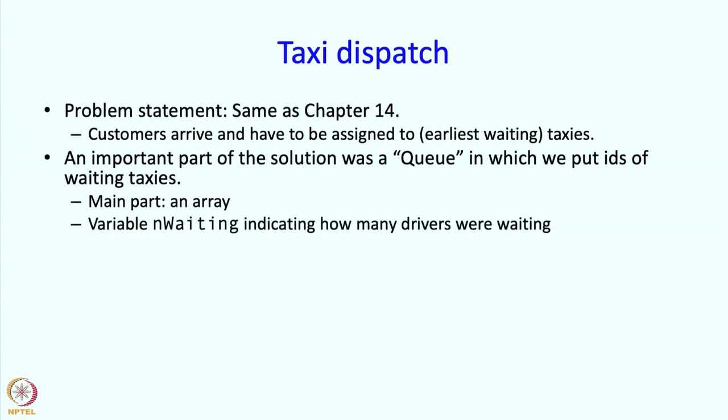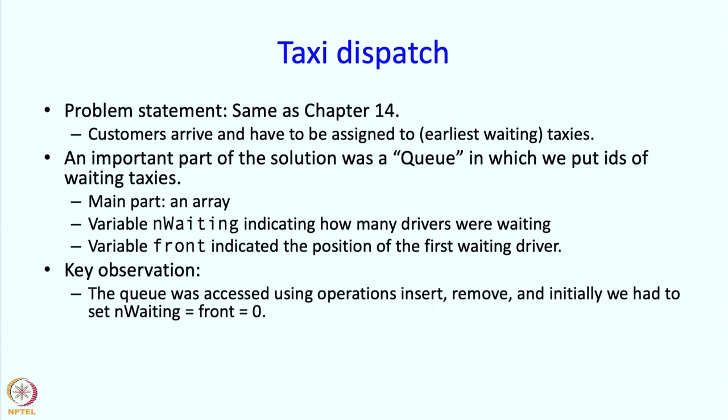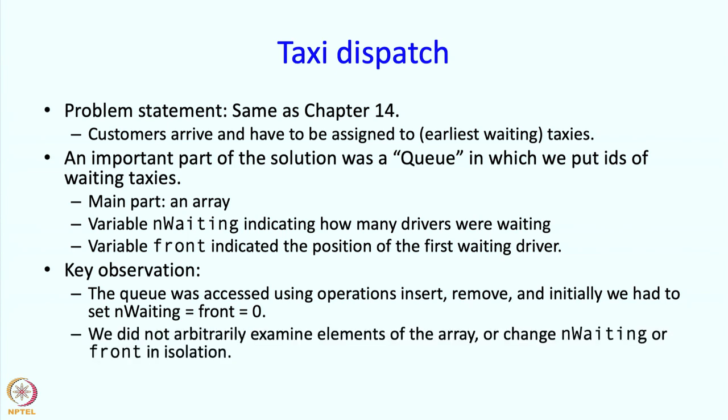And the main part of the queue was an array and these elements were the ones in which we stored the IDs. And then there was a variable nWaiting indicating how many drivers were waiting and a variable front which indicated the position of the first waiting driver. And again we can make the observation that the queue was accessed using operations insert, remove and initially we had to set nWaiting equal to front equal to 0. We did not arbitrarily examine the elements of the array or change nWaiting or front in isolation. So whenever we made the change there was some high level operation that we had in mind and our code was implementing that high level operation.